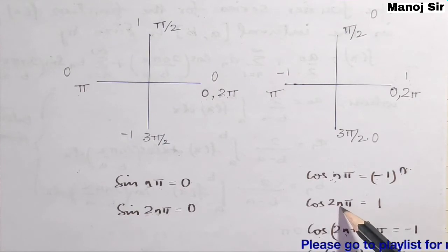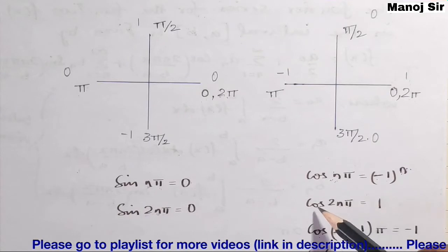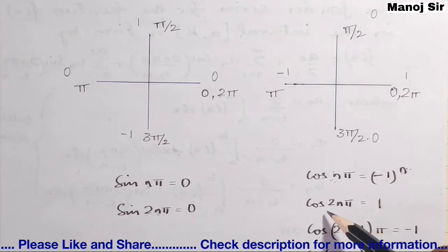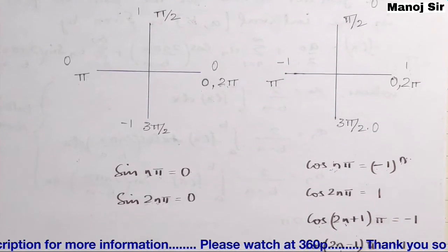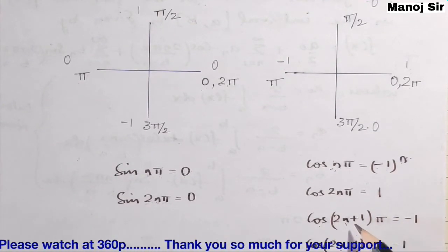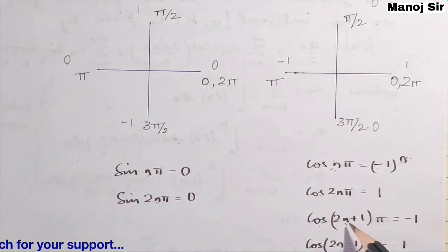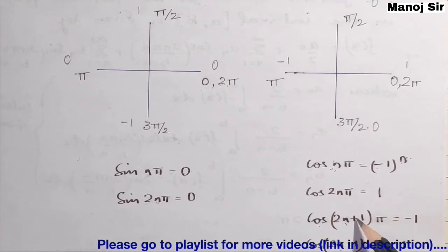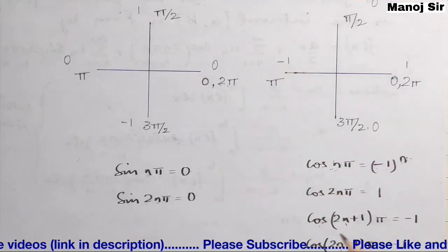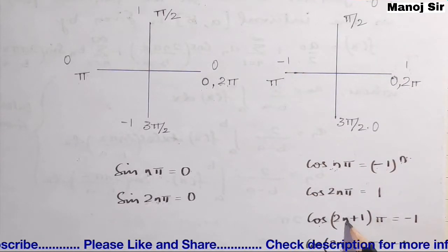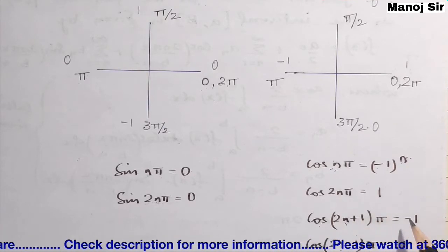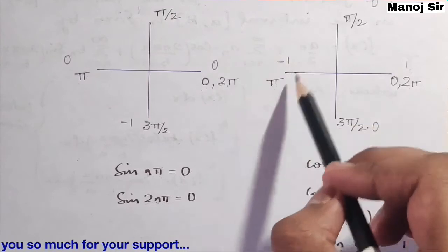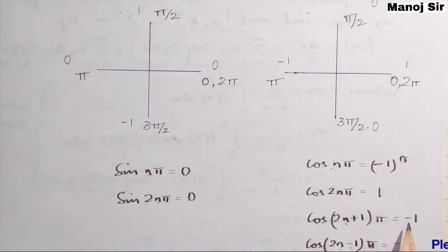Also: cos(2nπ) = 1 always. Putting n=1 gives cos(2π)=1; n=2 gives cos(4π)=1; n=3 gives cos(6π)=1. Additionally, cos((2n+1)π) = −1 always: putting n=1 gives cos(3π)=−1; n=2 gives cos(5π)=−1; n=3 gives cos(7π)=−1.